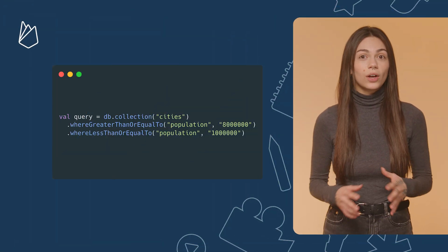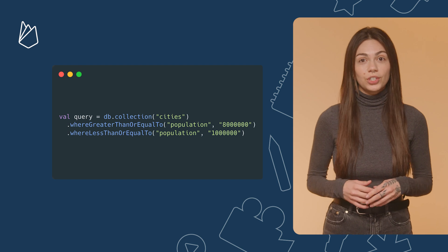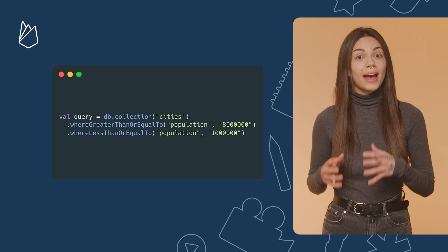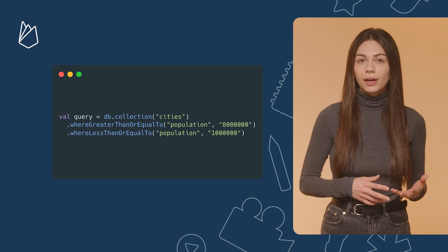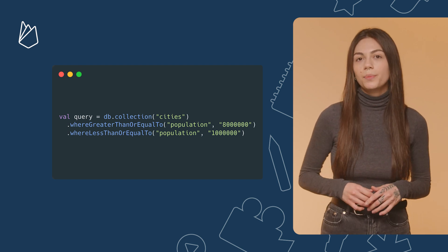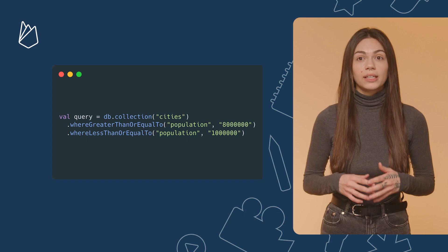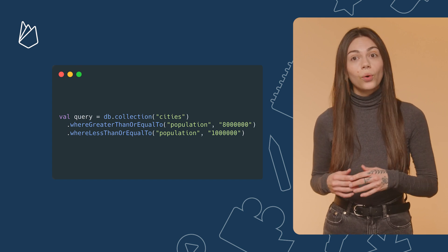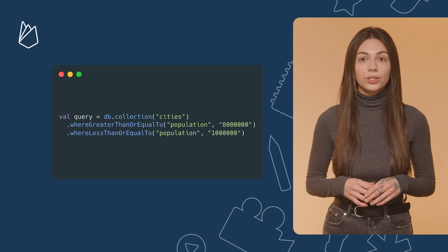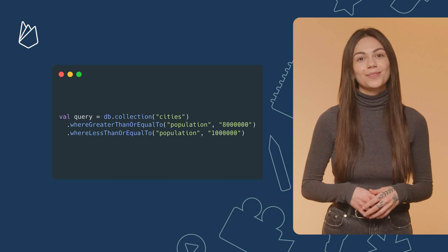Until this release, all inequality and range conditions in a query had to reference the same field. Now, however, a single query can have range or inequality conditions on multiple fields in your documents.